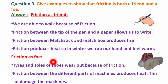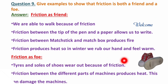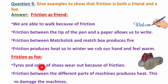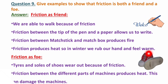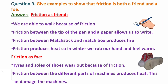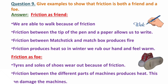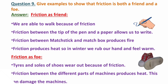Friction as foe: tyres and soles of shoes wear out because of friction. Friction between the different parts of a machine produces heat, which can damage the machines. Machine ke two parts jo hain, woh jab rotate hote hain, tab unke beech bhi frictional force hota hai, jis ki wajay se heat produce hoti hai. Even usse machine damage bhi ho sakta hai. Aur jo heat produce hoti hai, that is wastage of energy, jis se machine ki overall efficiency reduce hoti hai.